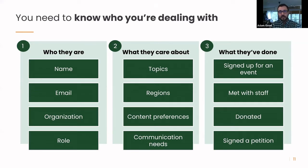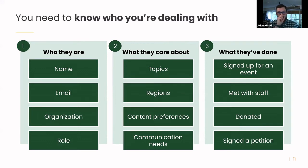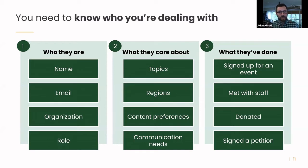A lot of the most important influence-generation work comes from conversations and in-person meetings, which may not be well-tracked or communicated by program staff. The ideal situation is being able to pull up anyone your organization engages with and see: they care about this topic, they work in this senator's office, the last contact was an event they registered for but didn't attend, and last week they met with one of our senior program staff. Having that holistic picture means you have a complete view of how they've been engaging.